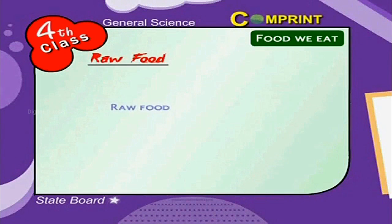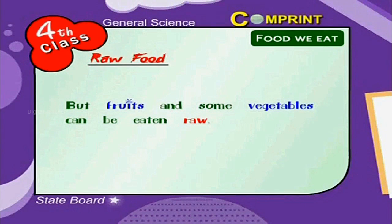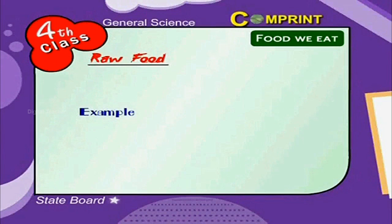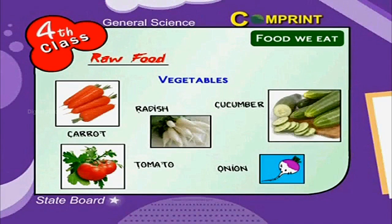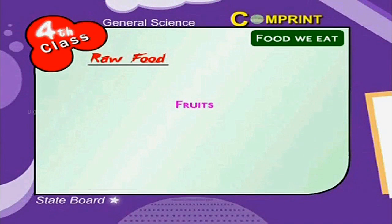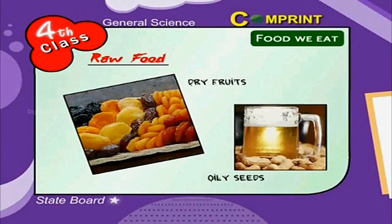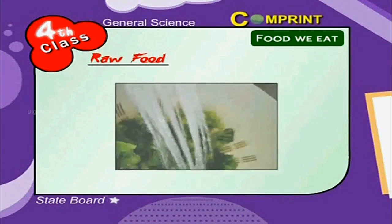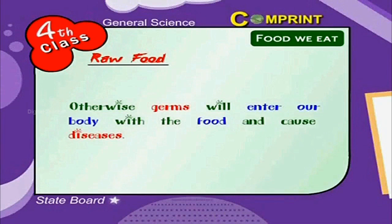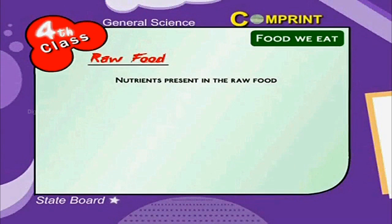Most of the food we eat is cooked, but fruits and some vegetables can be eaten raw. Vegetables like carrot, radish, cucumber, tomato, and onion can be eaten raw. Fruits like mango, custard apple, banana, dry fruits, and oily seeds can also be eaten raw. Raw foods should be washed with clean water or salt water, otherwise germs will enter our body and cause diseases. We should eat fruits in fresh condition only.